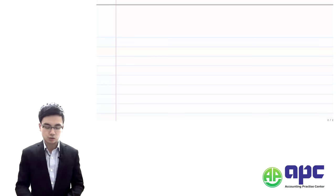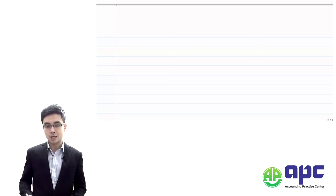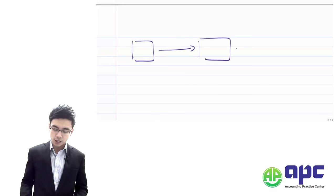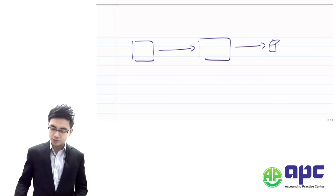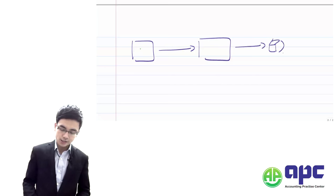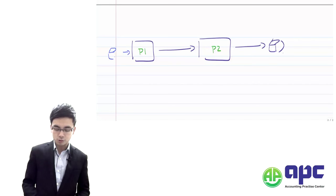For those industries, to produce products like the paper clip, it will have to go through a series of processes before it becomes finished goods. For example, process one and then process two, and before process one, raw materials are input.